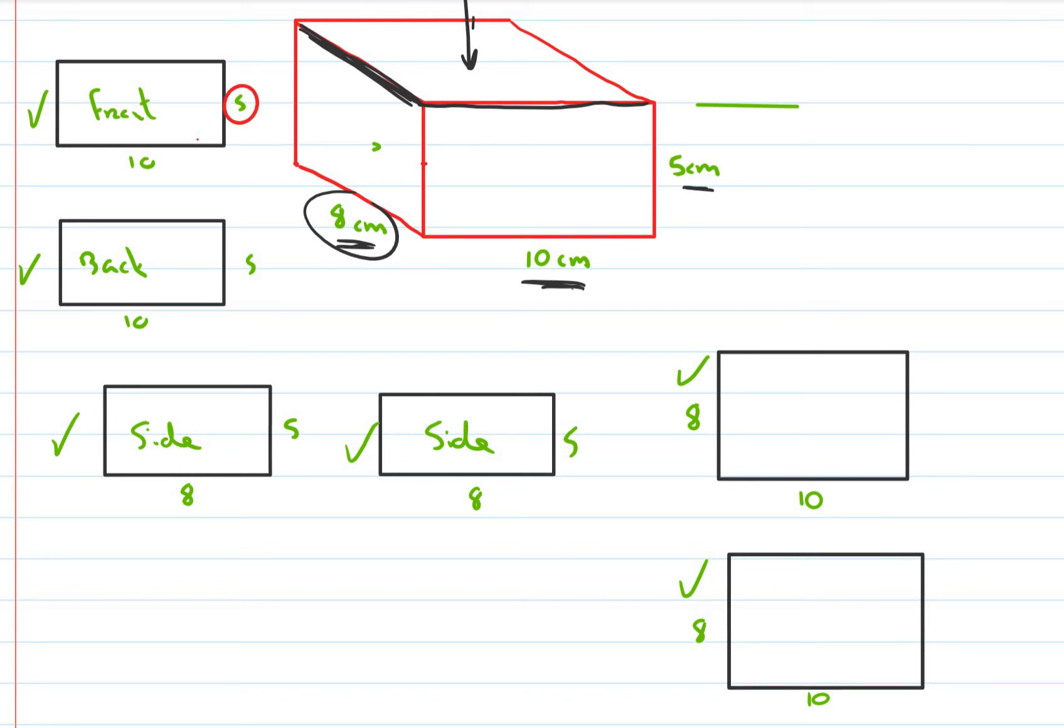So, 5 into 10, because how do we get the area of rectangle? Base by height. So, 5 by 10 is 50. We get this one, 5 by 10, 50.